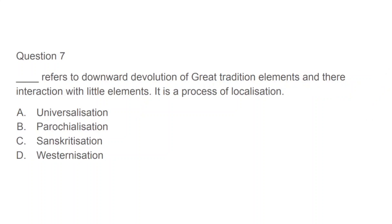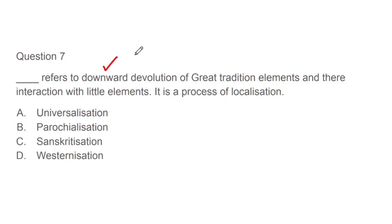Question 7: Dash refers to downward devolution of great tradition elements and their interaction with little elements — it is a process of localization. Same definition but reversed: earlier we were going from little to great tradition, and here we are seeing great tradition coming into little tradition. This process is also called localization. Options: universalization, parochialization, sanskritization, westernization. The correct answer is B, that is parochialization.